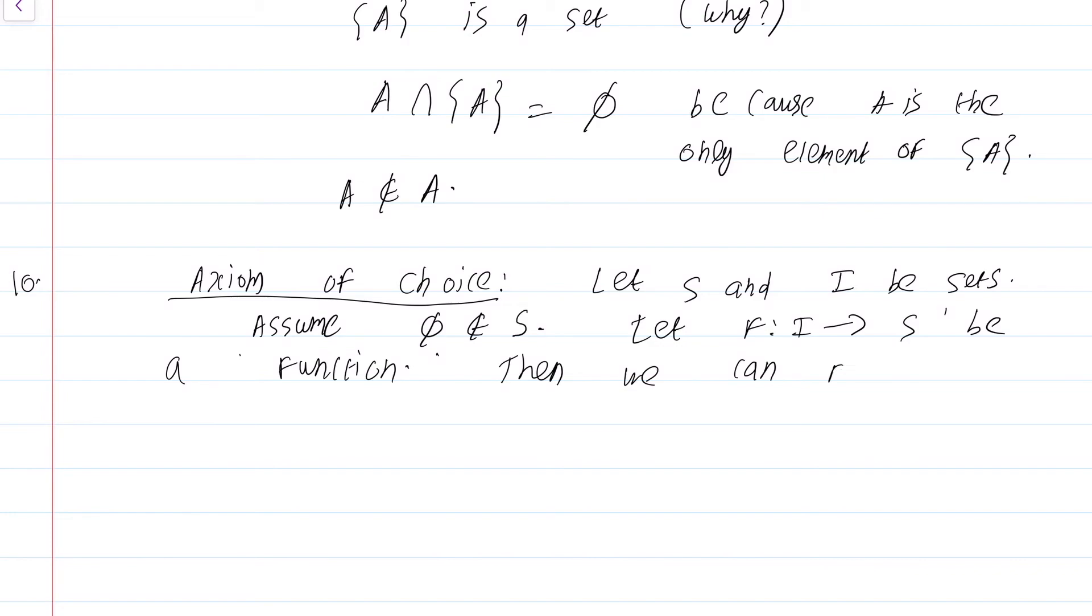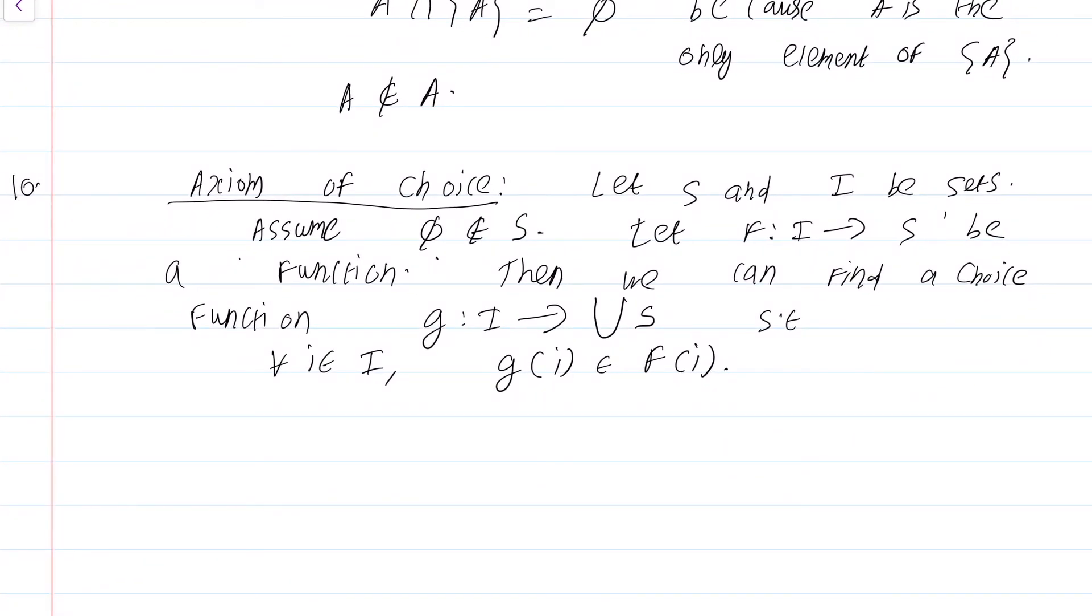Then, we can find a choice function G from I to union of S such that for all i in I, G of i is an element of F of i. Again, a very complicated axiom. Let me rephrase what this is saying in plain English. This I as you may have guessed is an indexing set.